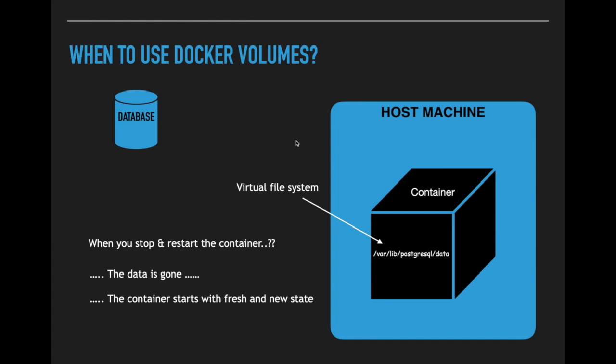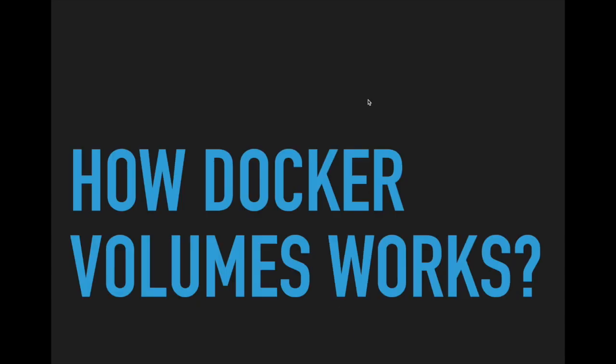Whatever the application has written some data on our container is gone — this is not the expected behavior. For any application deployed in a production environment, the database must retain its state even when we restart. The data should appear on our front-end application even after restarting the container. That is where Docker volumes comes into the picture.